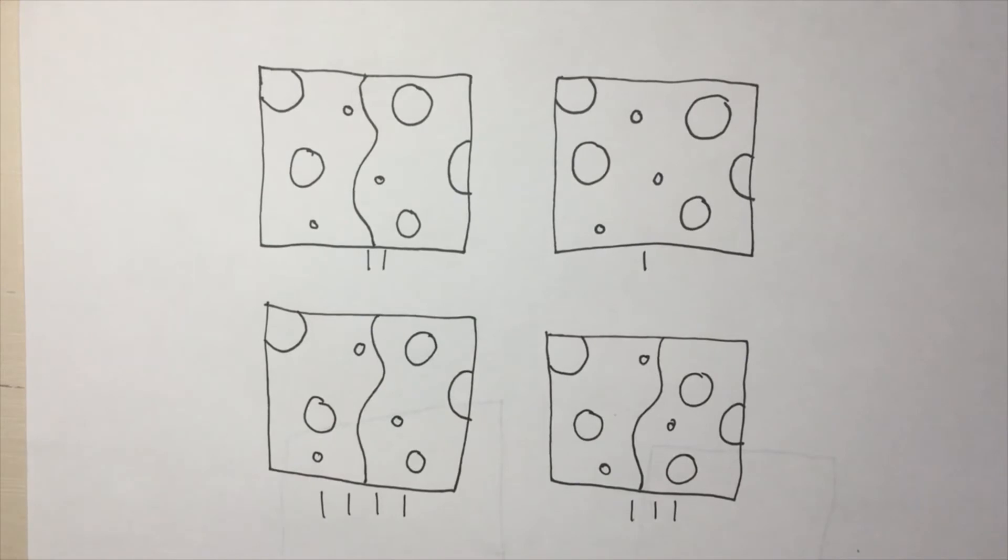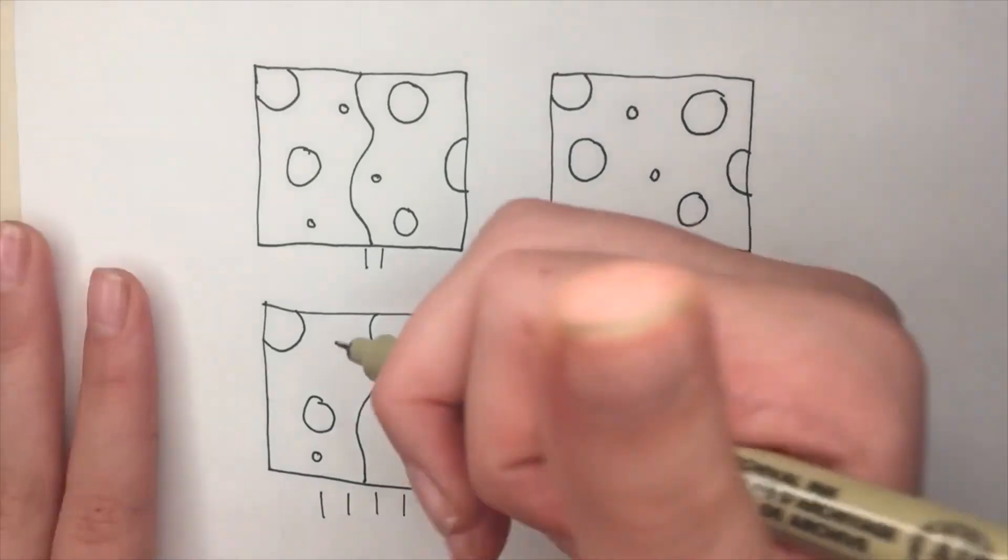Alright, the third step is to make squiggly lines in the whole box. Like this.